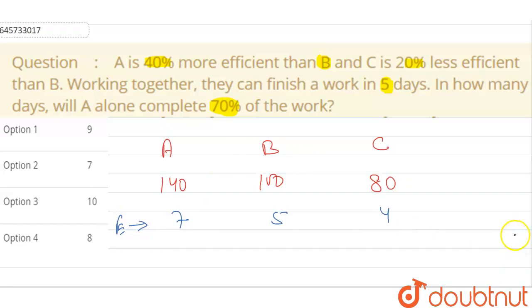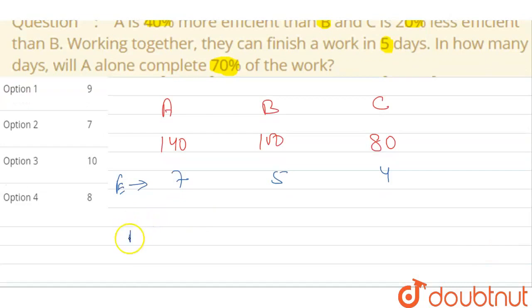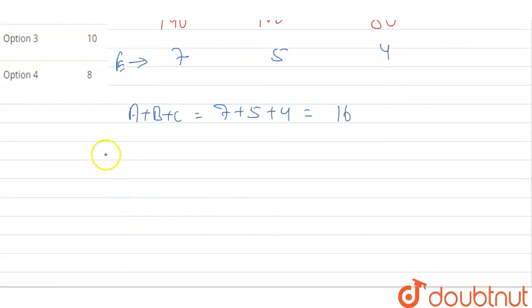Now, working together, they can finish a work in 5 days. Their combined efficiency is how much? A plus B plus C is 7 plus 5 plus 4, which equals 16 units. So the work will be efficiency into time, which is 16 into 5, 80 units.